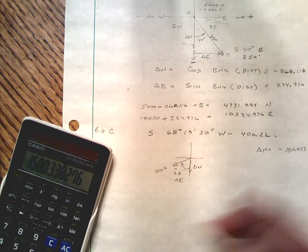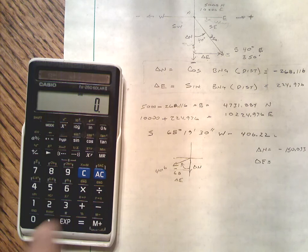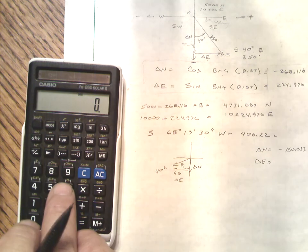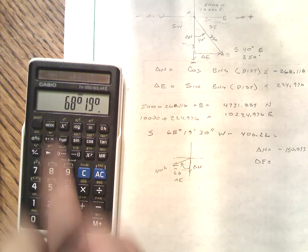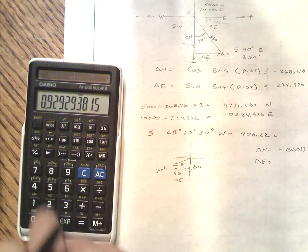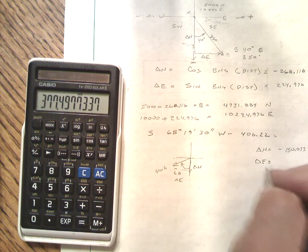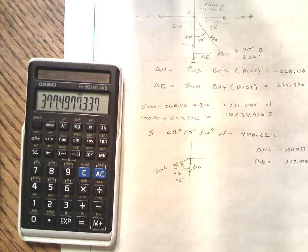We would do the same thing, and you should follow along with me or try this one. We could do 68, 19, 30, take the sine, multiply 406.22, and our delta east is 377.498. I usually go three decimal places. If I'm working in two decimal places, I usually carry the third one just for an extra level of precision.